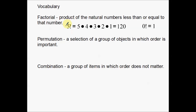Factorial simply means the product of the natural numbers less than or equal to that number. For example, this is 5 factorial — written as 5 with an exclamation point. The factorial symbol is just an exclamation point. In English it means one thing; in mathematics it means something totally different. 5 factorial simply means 5 times 4 times 3 times 2 times 1 — take this number and all preceding numbers and multiply them together. In this case, that equals 120.